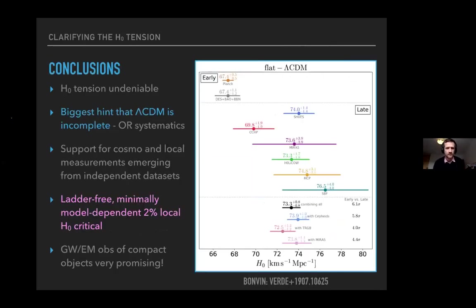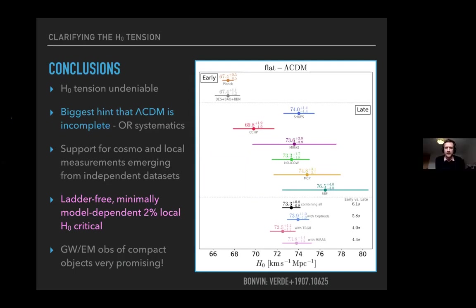To summarize: we're well past the point where the Hubble tension is dismissed as a statistical fluctuation. It's the biggest hint that our cosmological model is incomplete — but it might also be systematics. We don't have a compelling explanation on either side. Our best hope is to use independent data. The early universe picture is fairly well established — the inverse distance ladder independently agrees with the CMB. In the late-time universe, there's a compelling need for an astrophysics-independent, distance-ladder-free H₀ estimate. Multi-messenger observations of compact object mergers are a very promising path to that measurement.